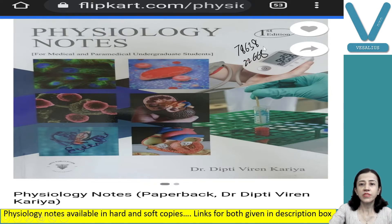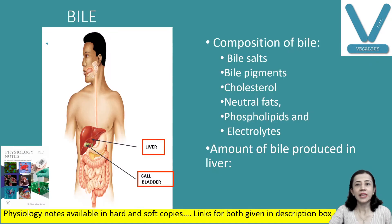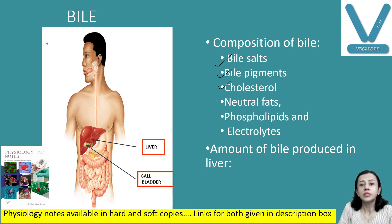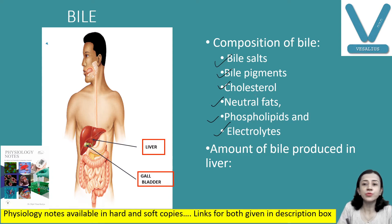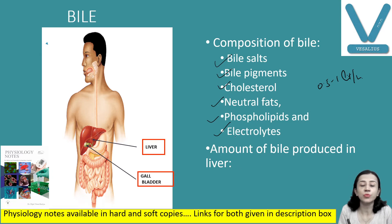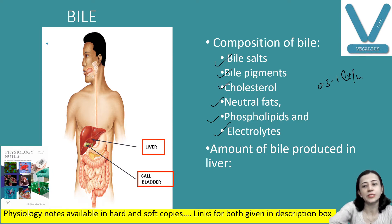So today we will discuss about composition and function of bile. Starting with the composition: bile is composed mainly of bile salts, bile pigments, cholesterol, neutral fats, phospholipids, and electrolytes. The liver produces about 0.5 to 1 litre of bile daily. Bile salts emulsify fat and aid in the absorption of digestive fat — digestion as well as absorption, both require bile salts.